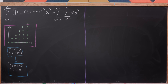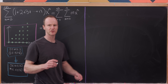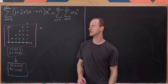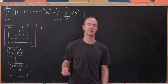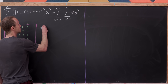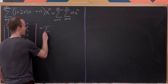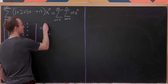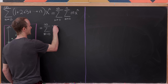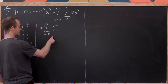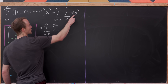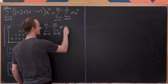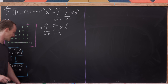That's how we change the bounds — or order of summation, since summation and integration are really the same idea. So now we have the sum as m goes from zero to infinity, and inside that the sum as n goes from m up to infinity, still summing m times x to the n.